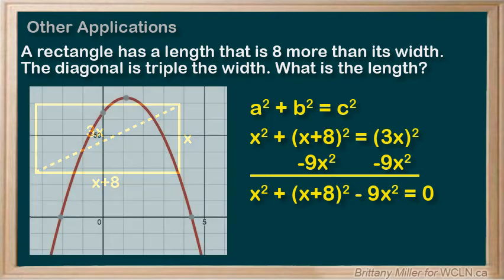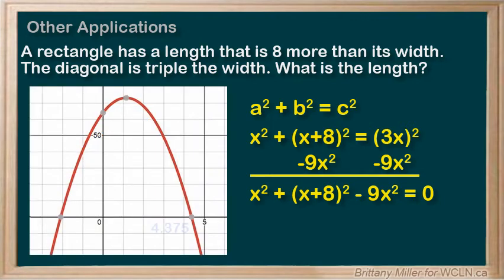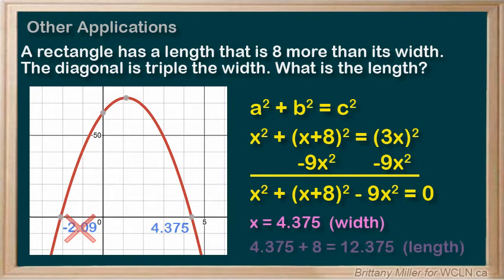Looking at where it crosses the x axis, it seems to be 4.375 and negative 2.09. Does it make sense for the width to be negative? Not really, so let's move forward with 4.375. Then that means the length is 4.375 plus 8, so 12.375.